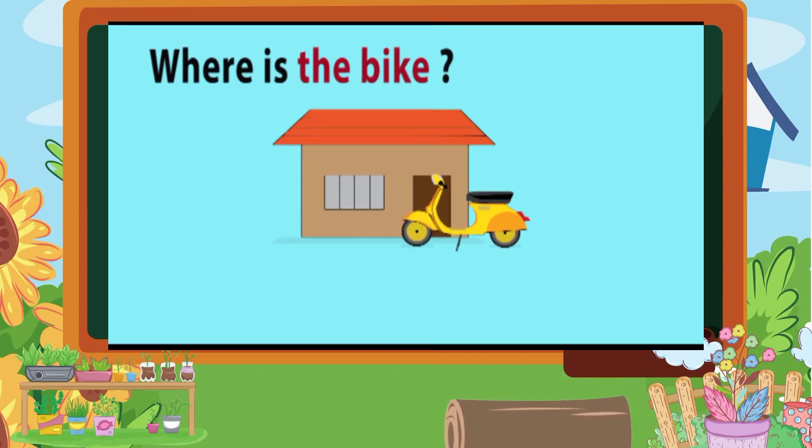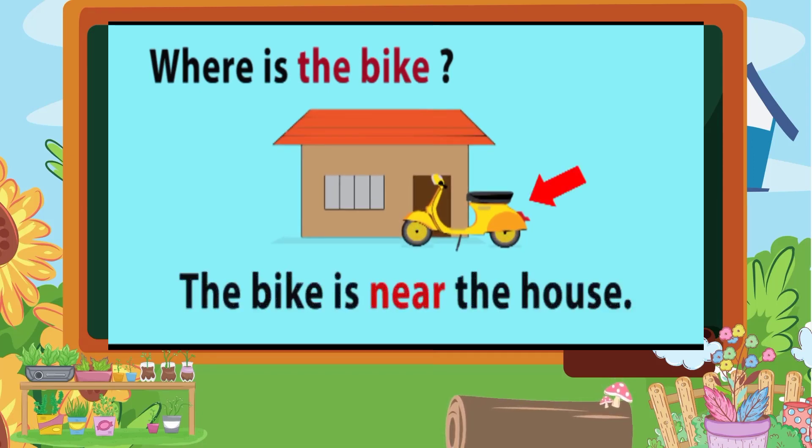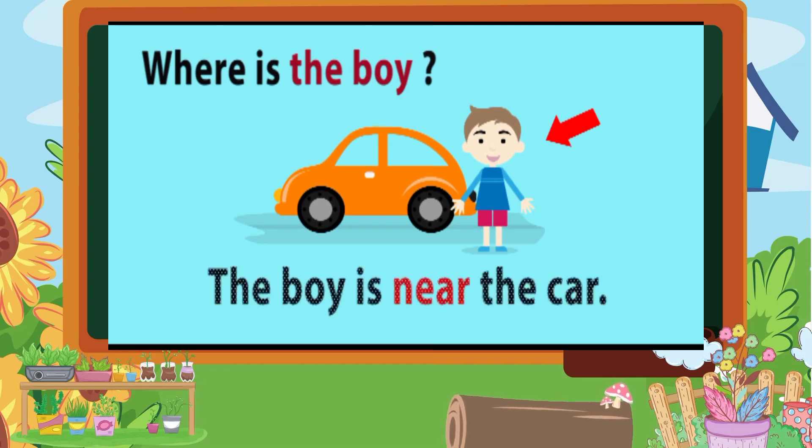Where is the bike? The bike is near the house. Where is the boy? The boy is near the car.